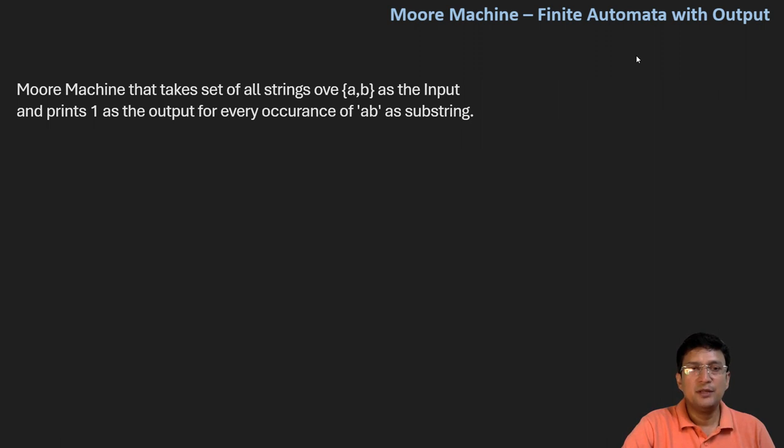The question is given here on the board: Moore machine that takes set of all strings over A and B as the input and prints 1 as the output for every occurrence of AB substring. To understand more in detail, we have the set of input alphabets are A and B, and the set of output alphabet we have to define. Here it says that if AB comes in the string provided to us, I should print the output 1. So 1 is obviously the output.